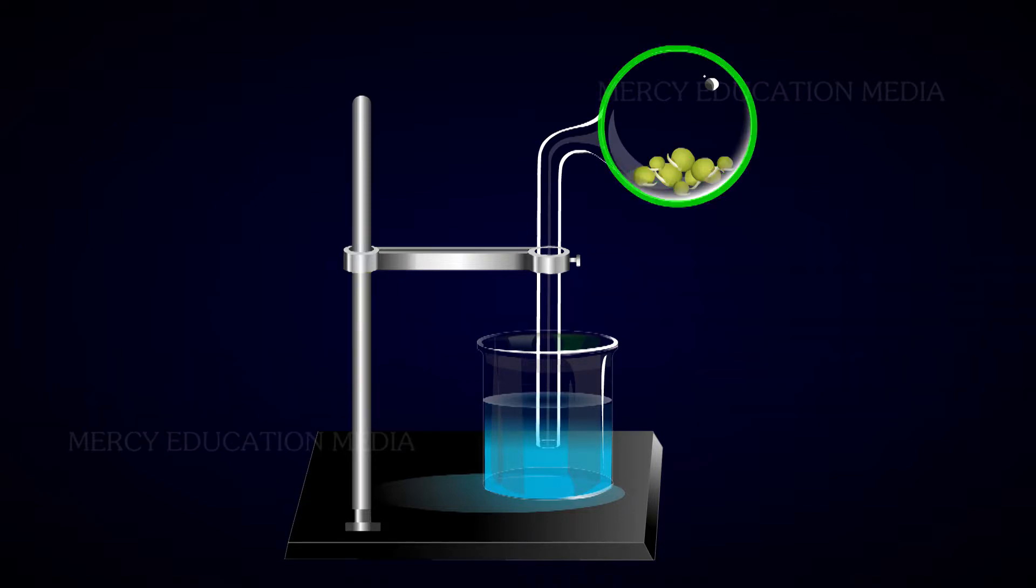Germinating seeds are taken in the bulb and the mouth of the tube is kept immersed in a beaker containing potassium hydroxide solution as shown in the diagram.